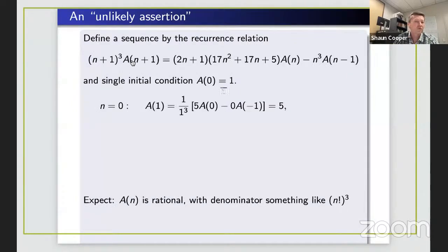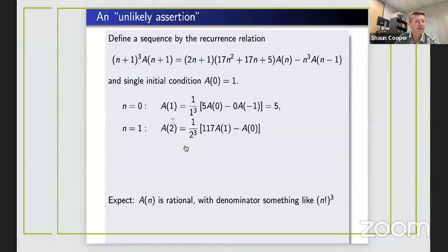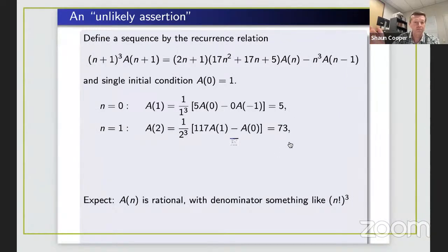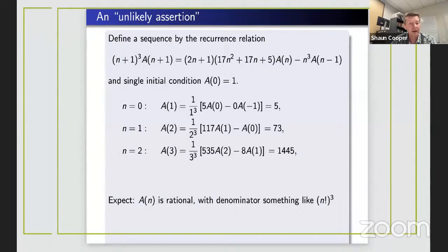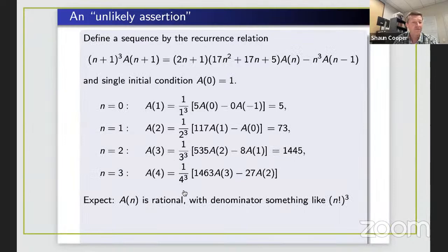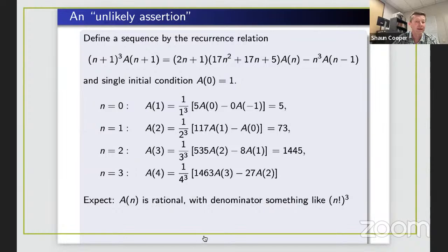Calculating a few terms: to get the (n+1)-th term you divide by (n+1) cubed. So a₁ = 5, a₂ = 73, a₃ and a₄ are also integers. From the recurrence you'd expect rational numbers with enormous denominators growing like the cube of n factorial, yet Apéry claimed these were integers — hence this unlikely assertion.